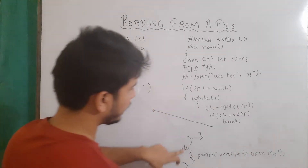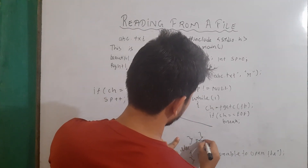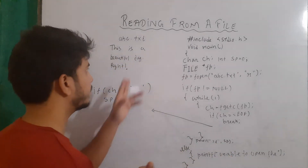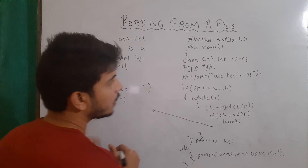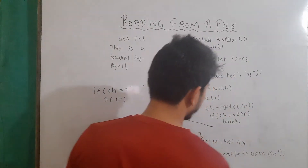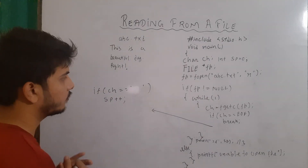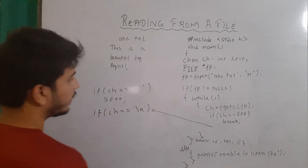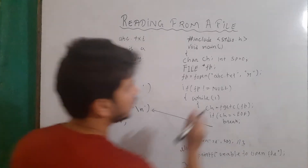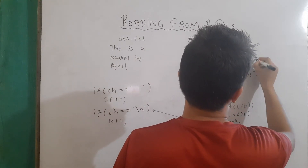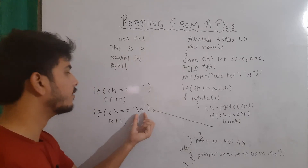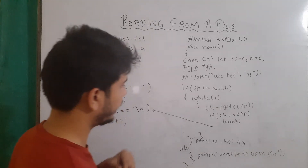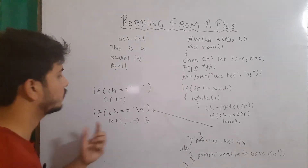Similarly, to count the number of lines, we check if ch equals the newline character '\n'. If so, then n++. Make another variable n equals zero. Whenever the newline character is encountered, n increments. The output will be three, meaning three lines are present. One might ask whether there is a newline character at the end, but remember that in file processing a newline character is always appended, so n will reach three.